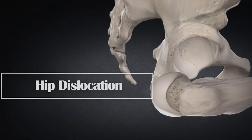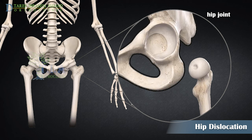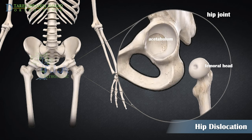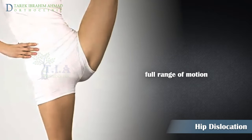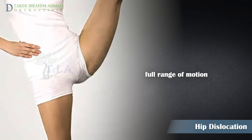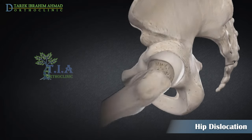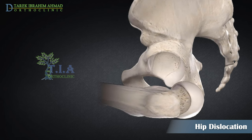Hip dislocation. The hip joint is a ball and socket joint. The ball at the top of the femur is called the femoral head. The socket, called the acetabulum, is a part of the pelvis. The ball rotates in the socket, allowing the leg to move forward, backward, and sideways. A hip dislocation is a severe medical emergency that occurs when the ball of the hip joint is pushed out of the socket.